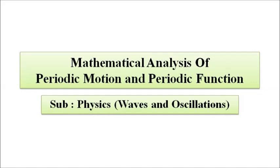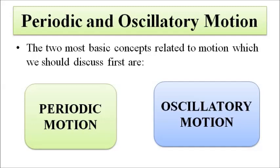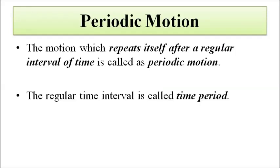As discussed in the previous video, motions can be divided into two basic types: periodic and oscillatory. Periodic motion is one which repeats itself after a certain fixed interval of time called the time period. Oscillatory motion is also periodic, but it has one extra feature — it exhibits a to-and-fro movement from one extreme to another about a fixed central position called the reference or equilibrium position.